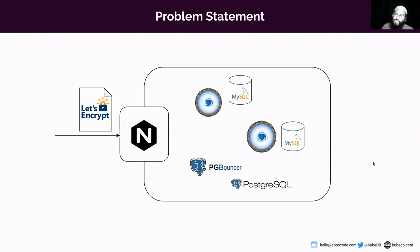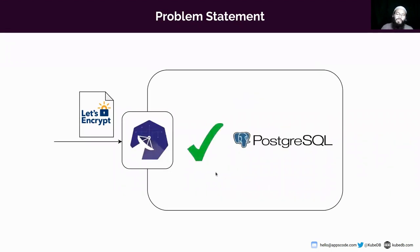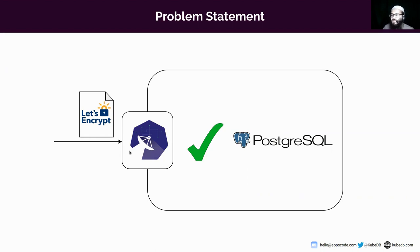With KubeDB Gateway, we could solve the problem without any PG Bouncer or ProxySQL. KubeDB Gateway supports SSL termination in the gateway itself. We can configure the gateway with Let's Encrypt, and the client can connect to the cluster in a TLS-secure mode using Let's Encrypt certificates. It can also establish a secure connection to PostgreSQL as well. That was the overall problem statement and what we achieved with KubeDB Gateway.